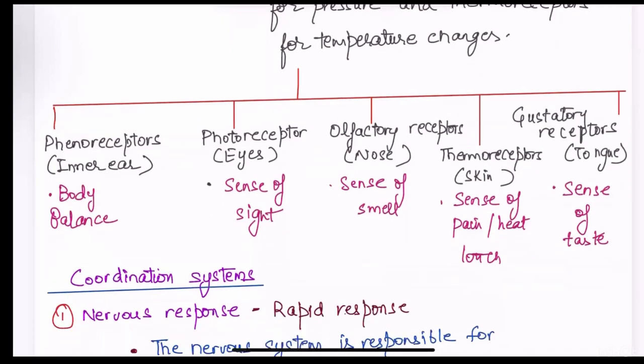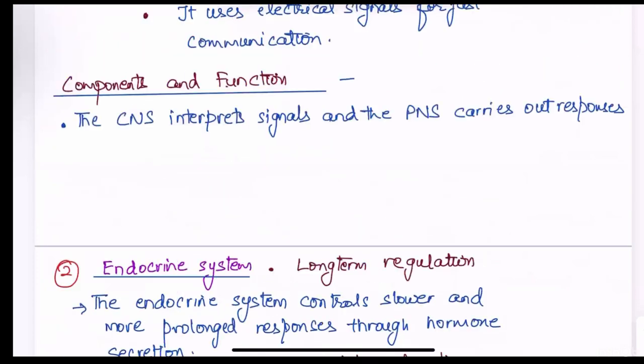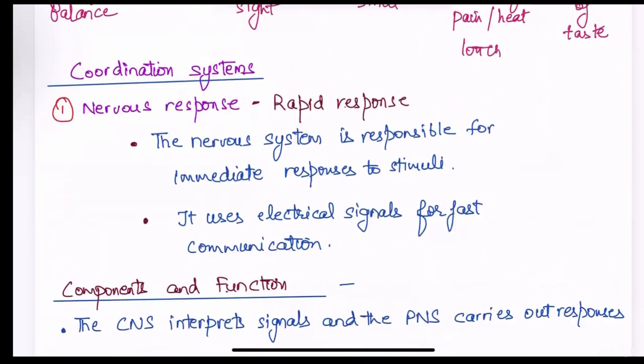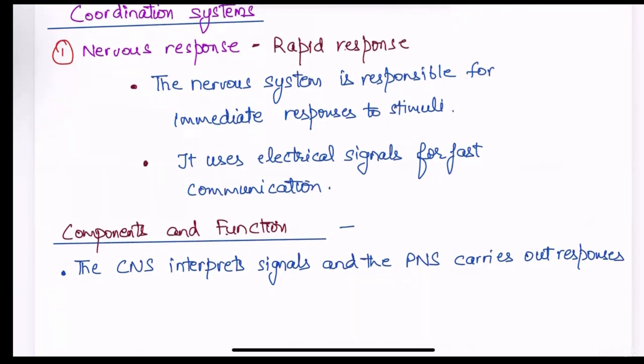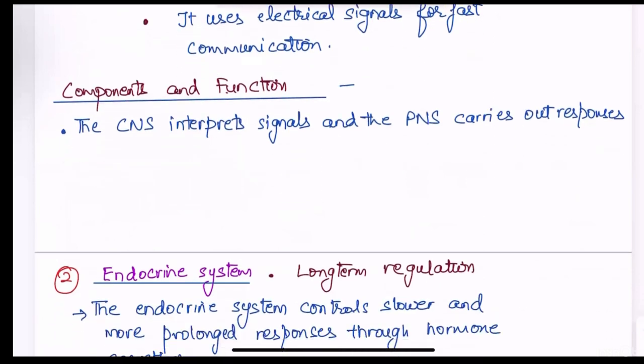Coordination system include nervous system and endocrine system. Nervous response includes a rapid response, just like you must have seen the reflex action. The nervous system is responsible for immediate response to stimuli. It uses electrical signals for fast communication. The components of nervous response includes central nervous system, that is brain and spinal cord. Their job is to interpret signals and the peripheral nervous system, they carry out responses.